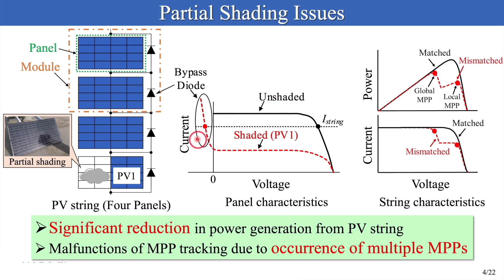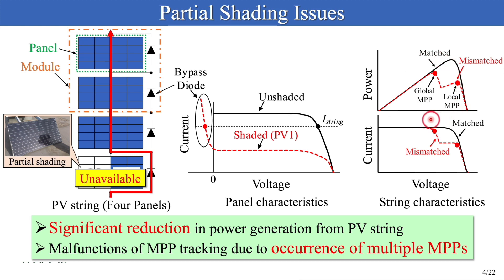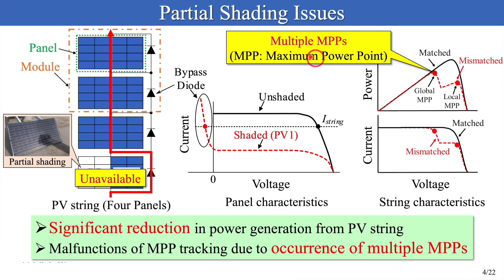As you can see from this figure, the shaded panel is likely bypassed through a bypass diode at a certain current value. Since the bypassed panel no longer contributes to power generation, it triggers a significant reduction in power generation from the PV string. In addition, mismatched panel characteristics exhibit multiple maximum power points (MPPs), including a global MPP and local MPPs. The occurrence of multiple MPPs confuses and hinders the conventional MPP tracking algorithms, because the PV string might operate at a local MPP, which is a suboptimal point producing less power than the global MPP.